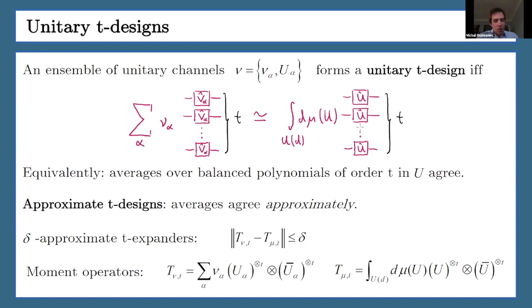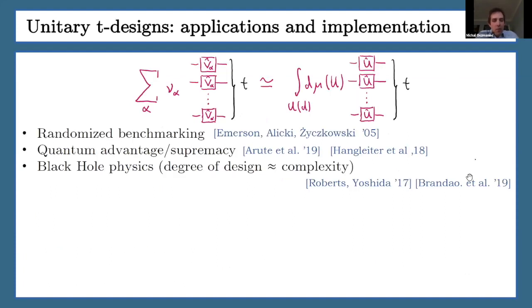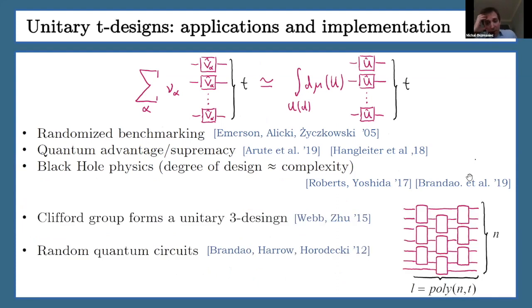We can relax this notion to talk about approximate T designs. So then averages agree approximately. Some particularly nice notion for this approximate T designs are approximate T expanders, in which you measure how much those averages are different from each other by the operator norm of the difference of so-called moment operators. As many of you probably know, those unitary designs or approximate unitary designs find applications in various branches of quantum information and quantum computing, like randomized benchmarking, in the context of achieving quantum advantage or supremacy, and lastly, in the context of black hole physics, when the degree of the design is associated to complexity.